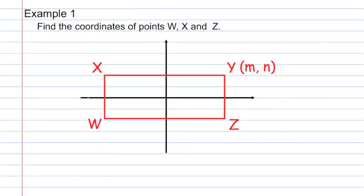Example 1: Find the coordinates of points W, X, and Z. This is really the first part that you need to understand before moving on to proofs in the coordinate plane — how to place a shape in the coordinate plane in the general sense. Here we're given the coordinates of point Y, which are m and n.